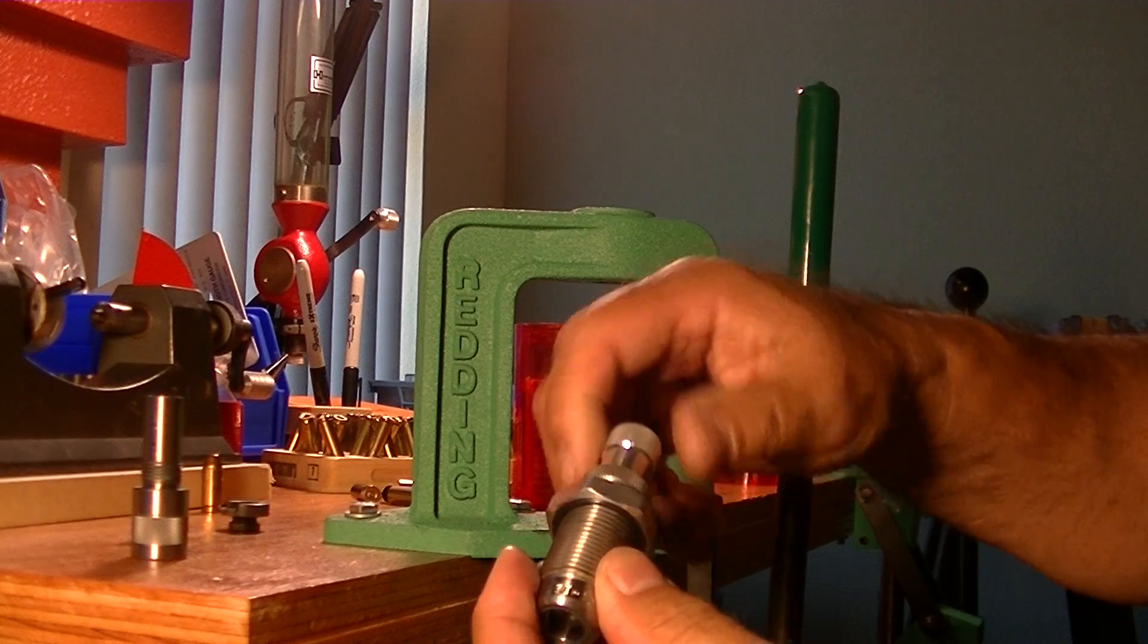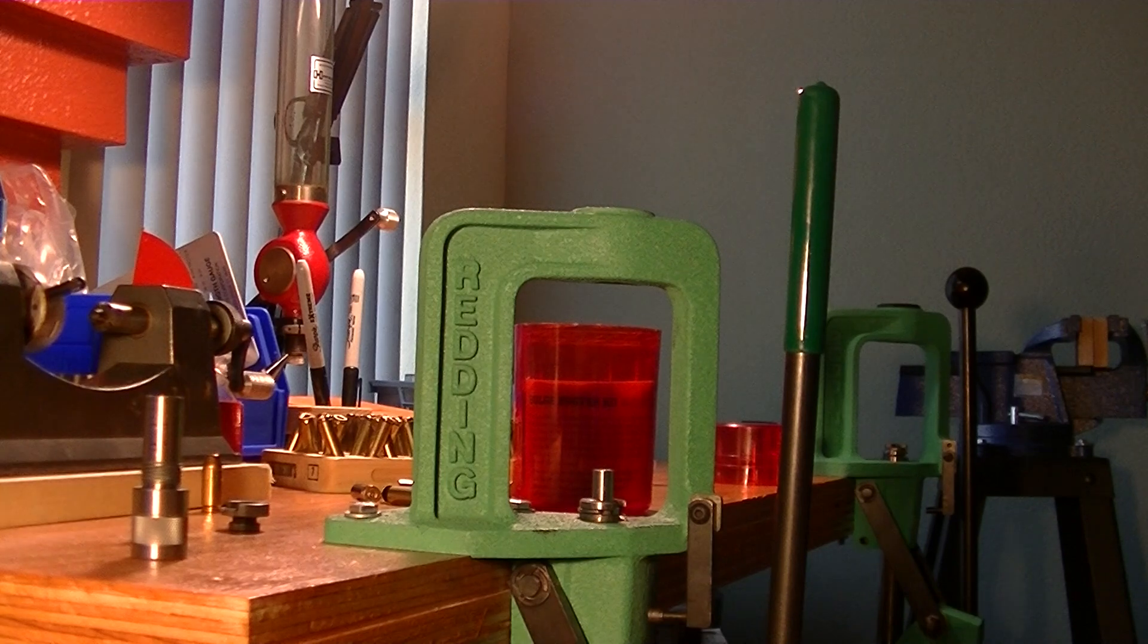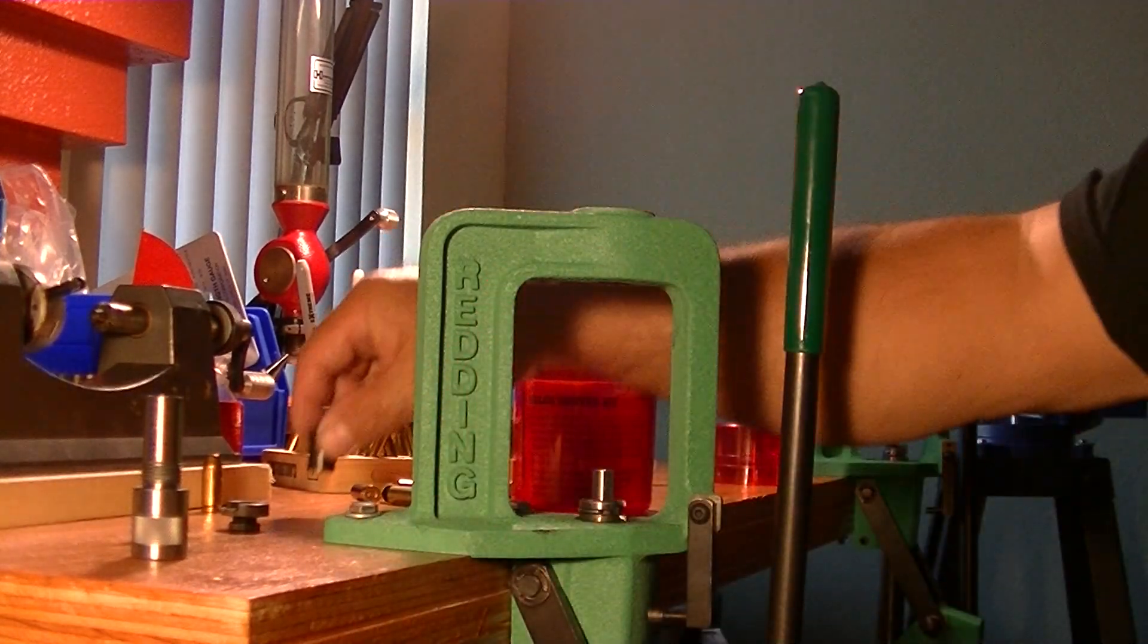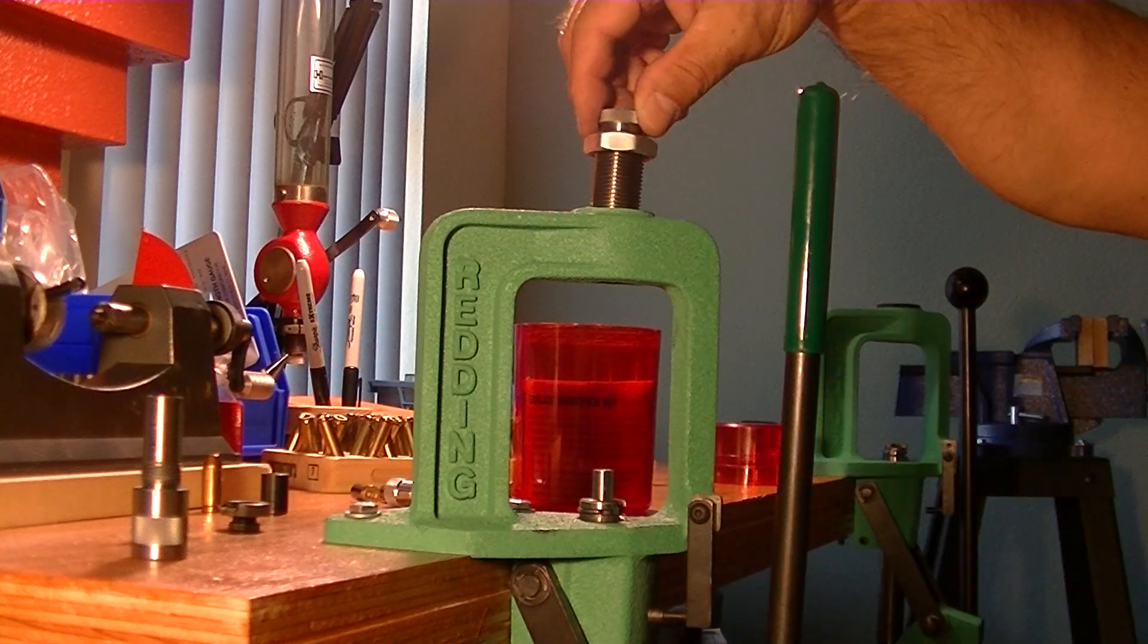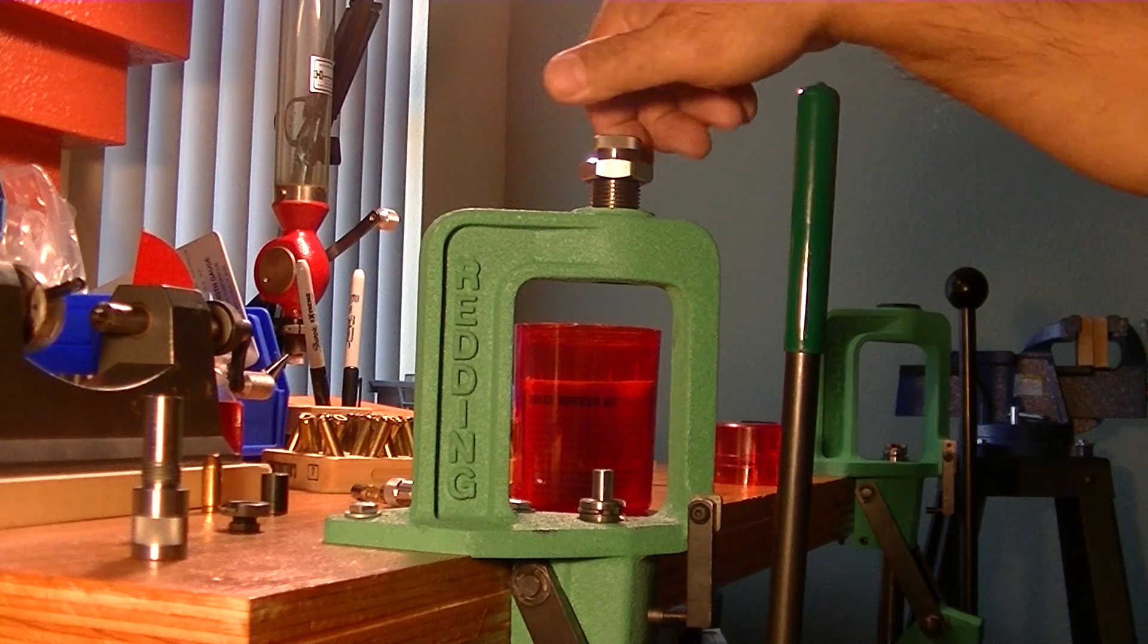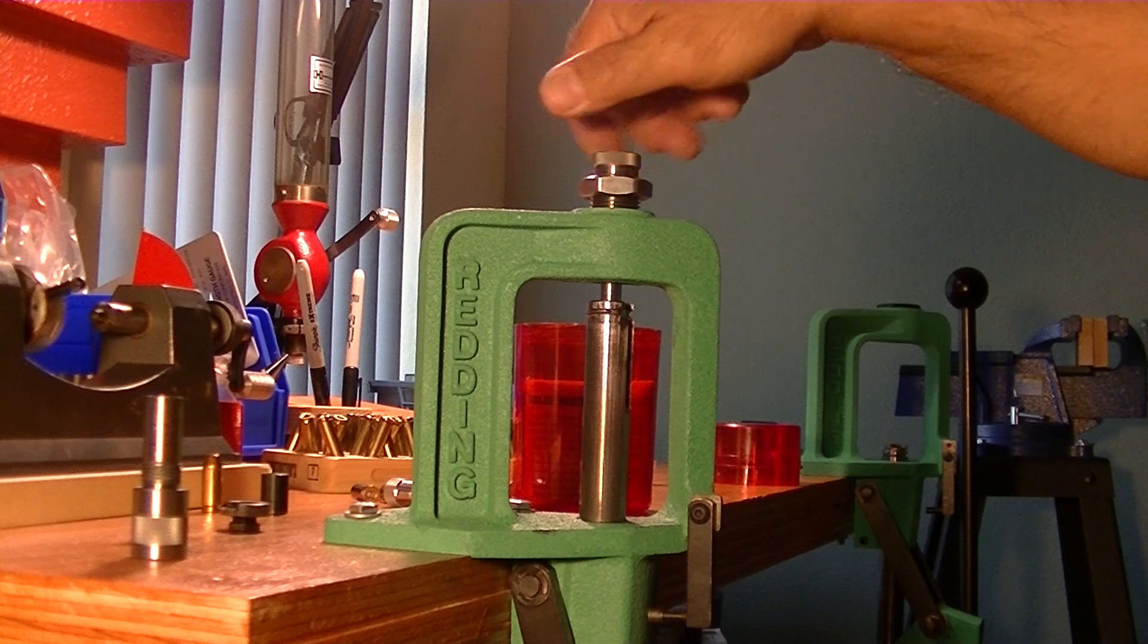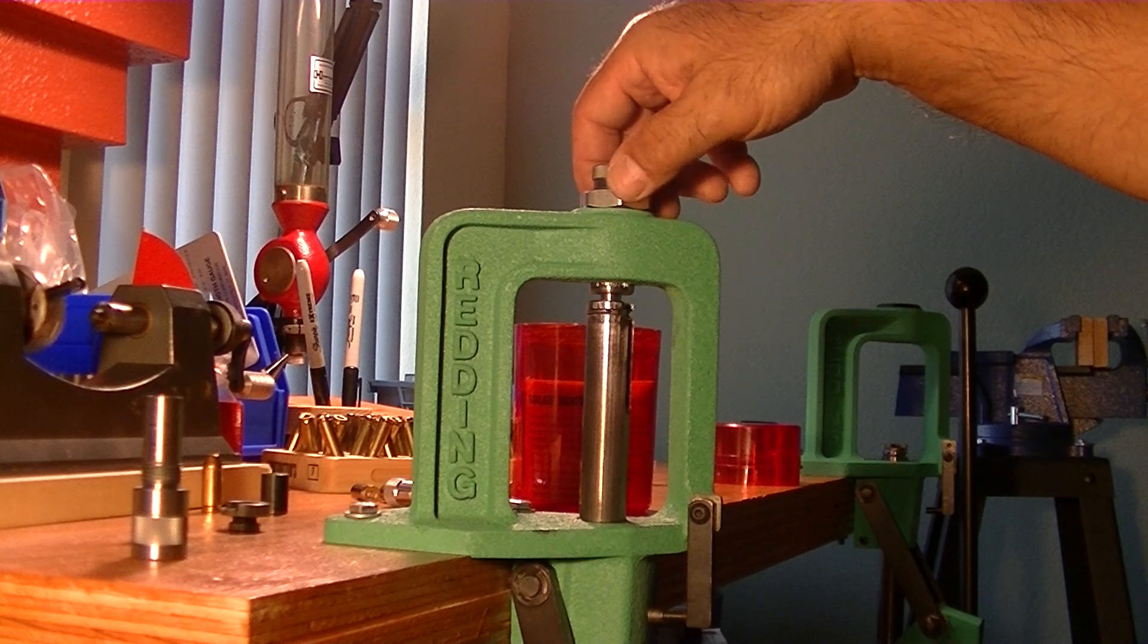You have to remove the adjusting screw and the crimp sleeve because that's not needed. You screw it all the way in until it's slightly less than a quarter inch from the top of the ram.